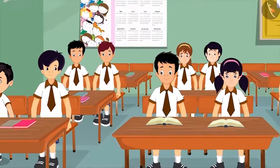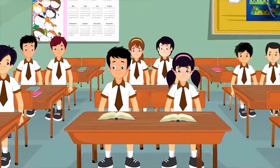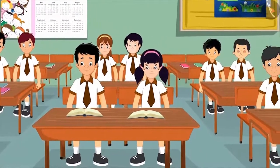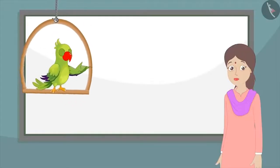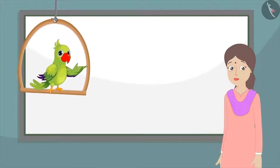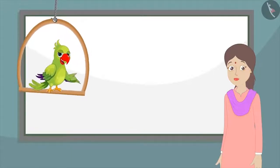Today Chotu's class is going for a picnic, and Chotu's teacher asks all the children to stand in groups of four. Then she asks the four children to stand in a line in the small to large order based on their height.